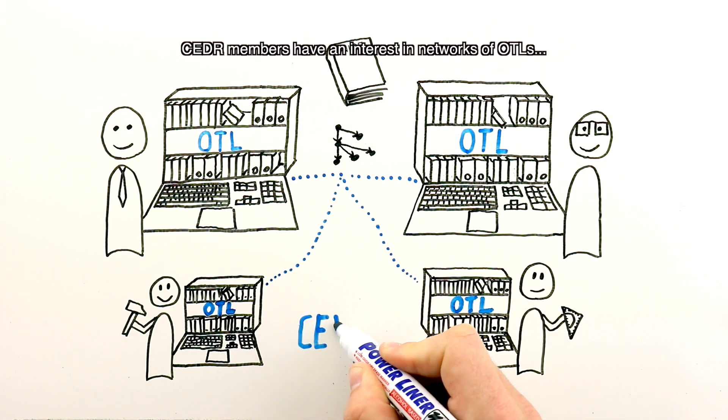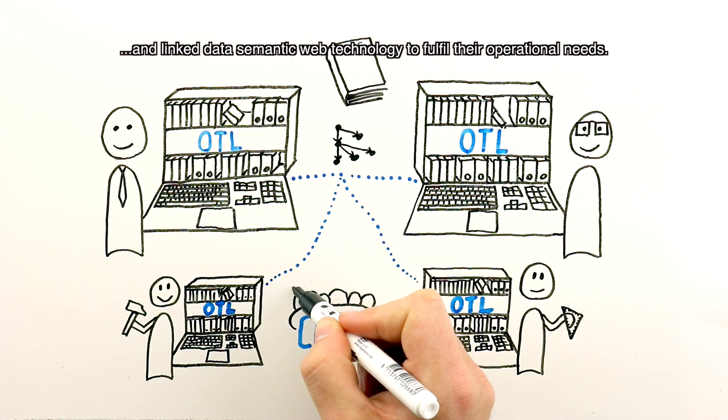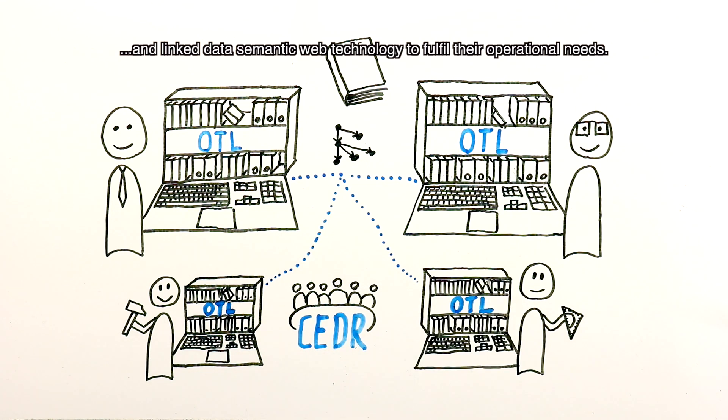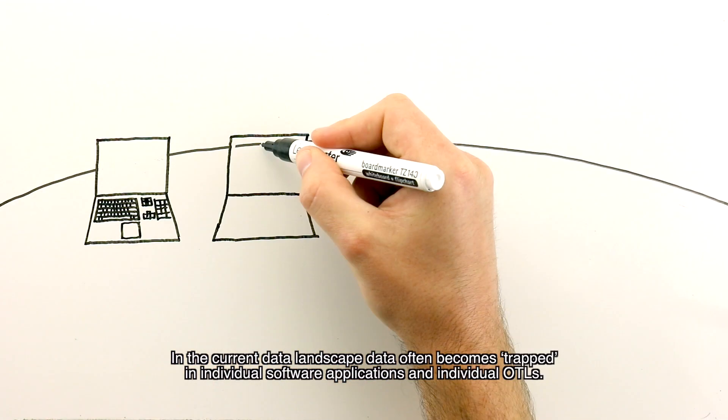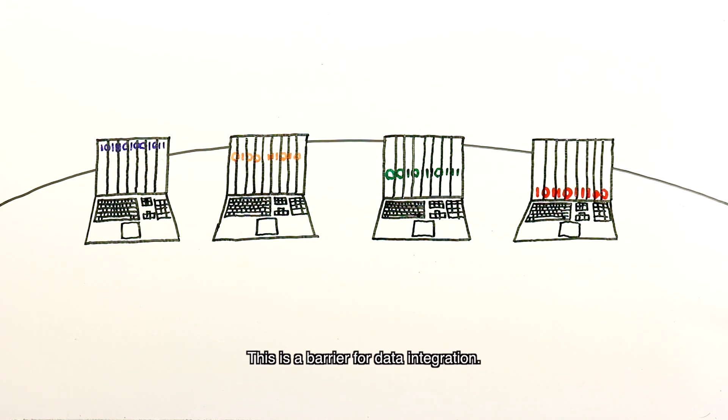CEDR members have an interest in networks of OTLs and linked data semantic web technology to fulfill their operational needs. In the current data landscape, data often becomes trapped in individual software applications and individual OTLs. This is a barrier for data integration.